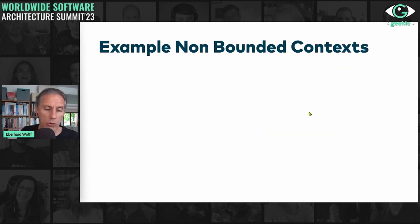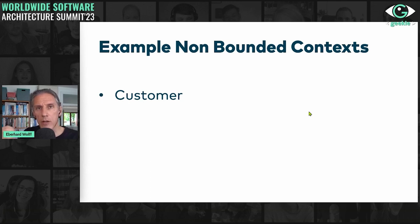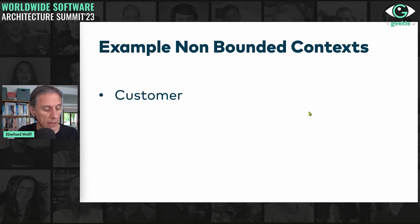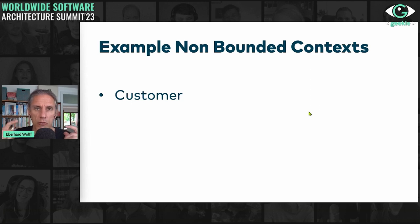There might be other bounded contexts people think make sense — for example, the customer. Every functionality we've seen actually talks about customer: we send stuff to the customer in delivery, we write invoices for customers, and customers order stuff. So once we have one module that talks about customer, it's going to be used all over the place. If we change the business process for order, we'd also need to change the customer module — meaning we'd need to change at least two modules, which is not great because we really want to contain changes in one module.